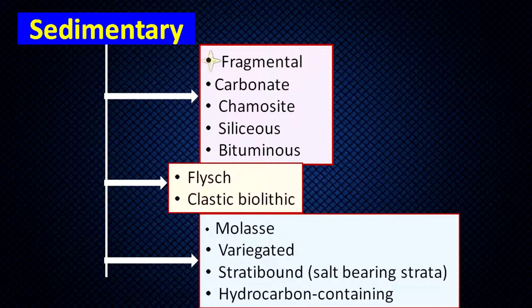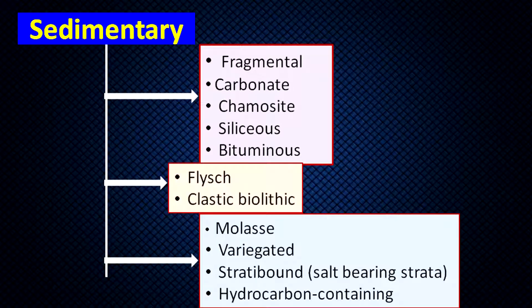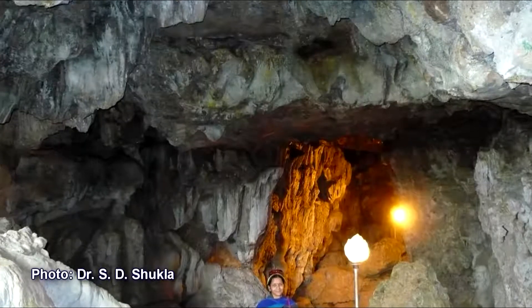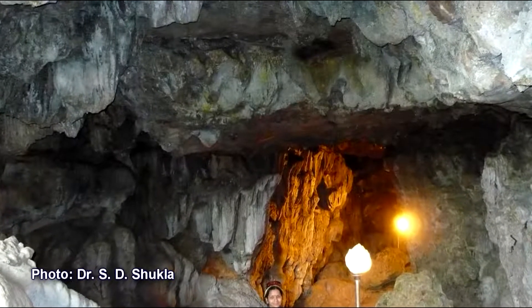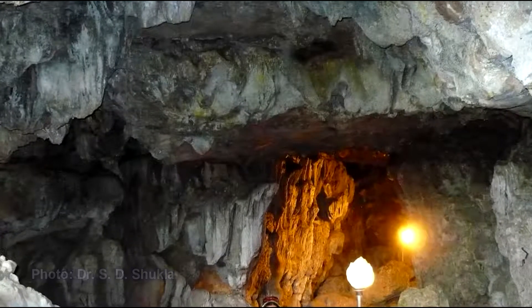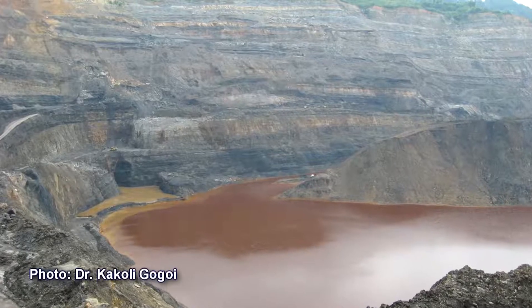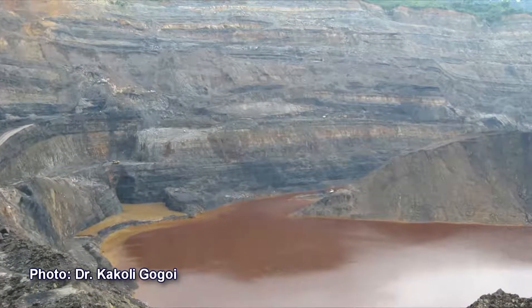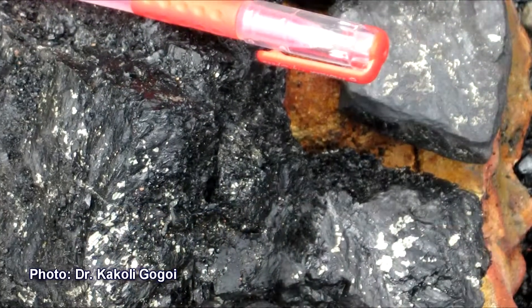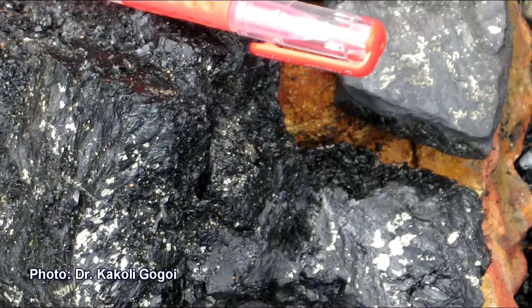Now I will take up the sedimentary processes and what types of ore deposits are formed by them. The first is fragmental — meaning plastic breaking of sediments — where sediment breakdown initiates ore formation. Then carbonate formation: carbonate rocks are formed by precipitation in water, and during precipitation certain ore deposits are also formed. Then chemosite formation, siliceous rock formation, and bituminous formations. Bituminous means organic carbon plays an important role, and most coal deposits are derived from bituminous sedimentary processes.